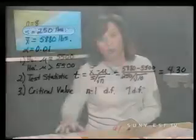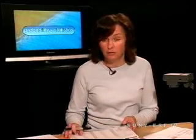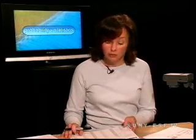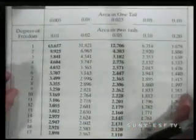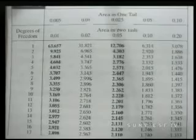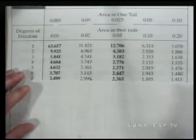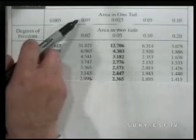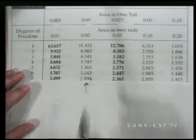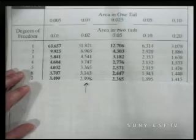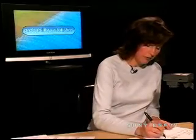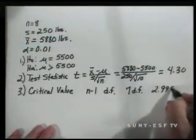We now need to go to our student T distribution table to determine our critical value. We have seven degrees of freedom and we have an alpha of 0.01. This gives us a critical value of 2.998.